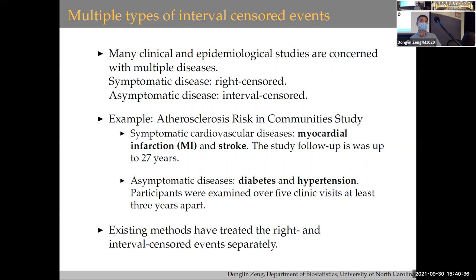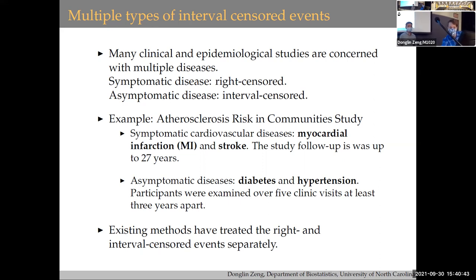Related to COVID-19: a symptomatic event can be time to hospitalization or time to death — those are typically right censored events. An asymptomatic event would be time to infection. People get infected by COVID-19 but you don't observe it directly. Once they go for testing and test positive, you know the infection occurred before the testing date.